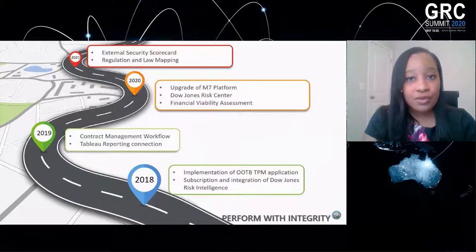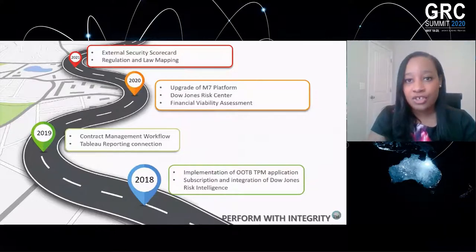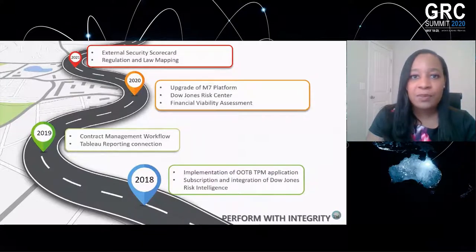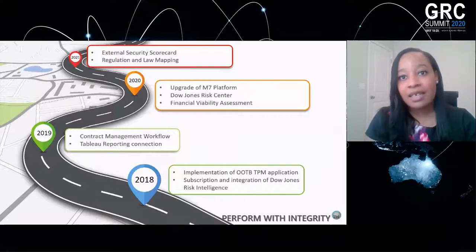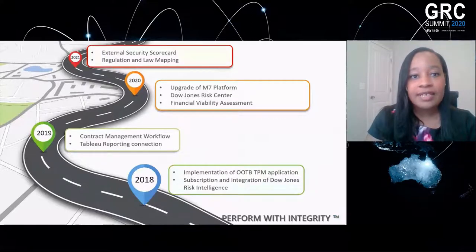Next year, we are looking to implement external security scorecards to give us easier oversight of those third parties. We are also looking at mapping regulations and laws to our questionnaires so we can quickly identify if a vendor is compliant. If they have a filing, a litigation, or they appear on a watch list, it will automatically tie that to the vendor and their relationship so that we can quickly do a review and assess the risk.